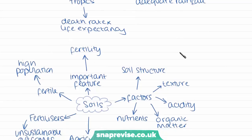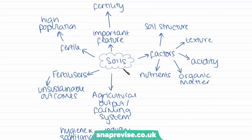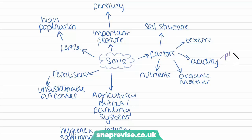The next factor is soils, which is very much influenced by the climate itself. Soil fertility is a very important feature of the environment because the more fertile the soil, the more plants and crops it can support. The factors that influence soil fertility include the soil structure, texture, acidity (the pH of the soils), levels of organic matter, and levels of nutrients. These factors determine agricultural outputs and the type of farming system that can be employed on a piece of land.